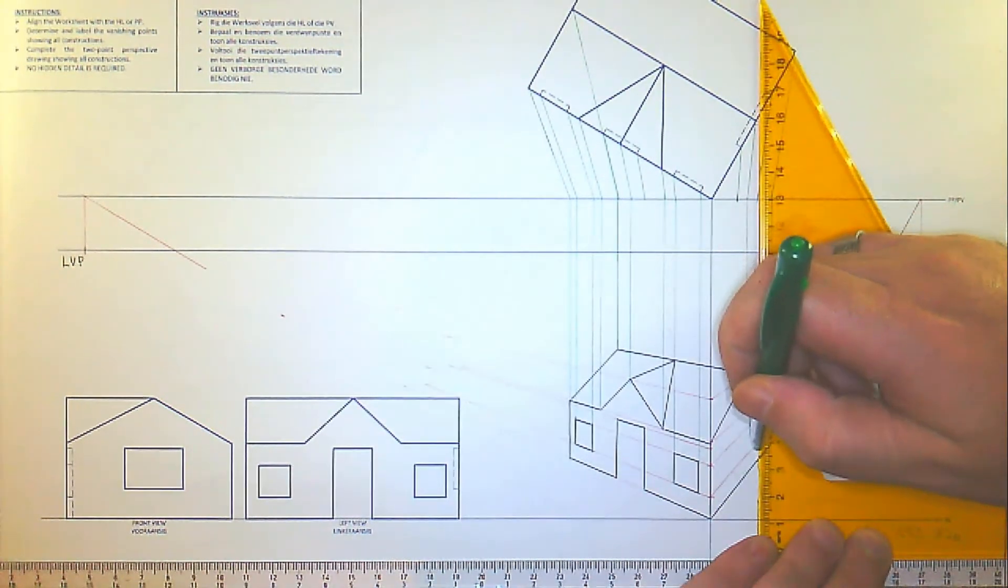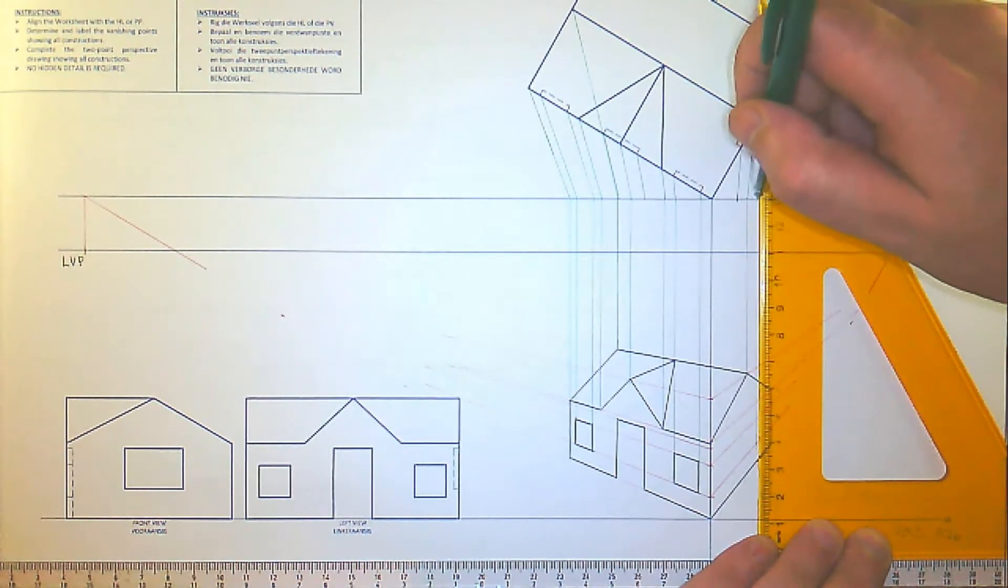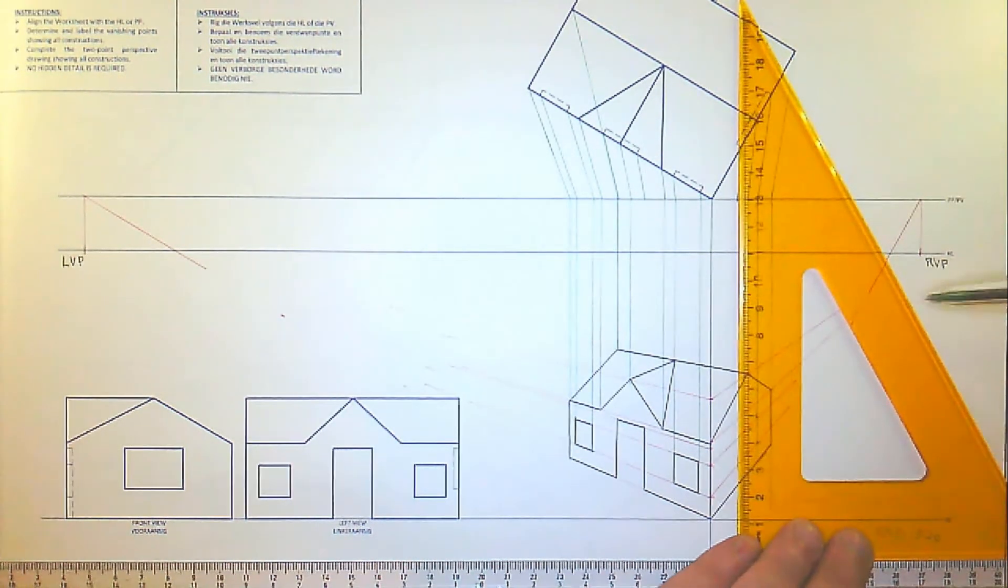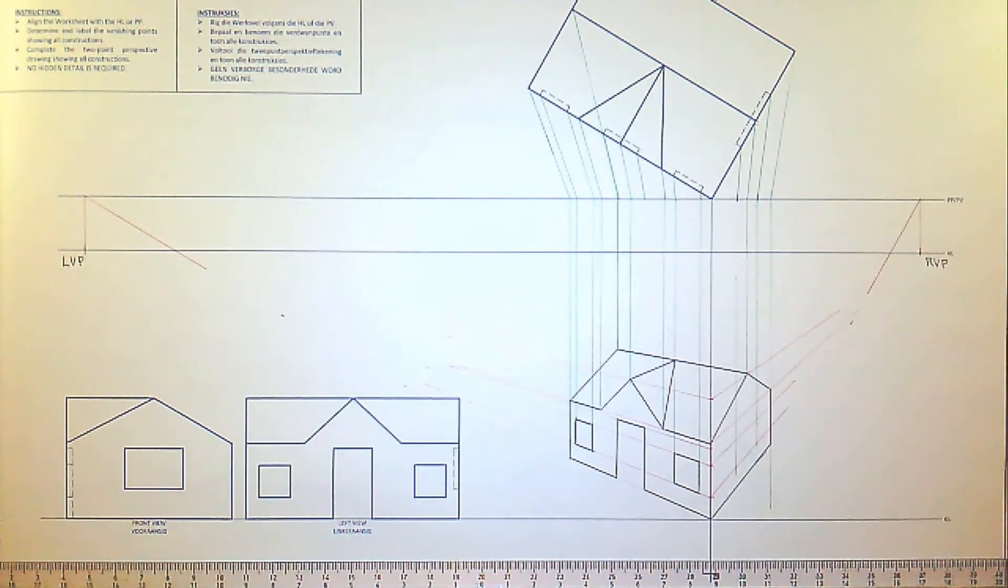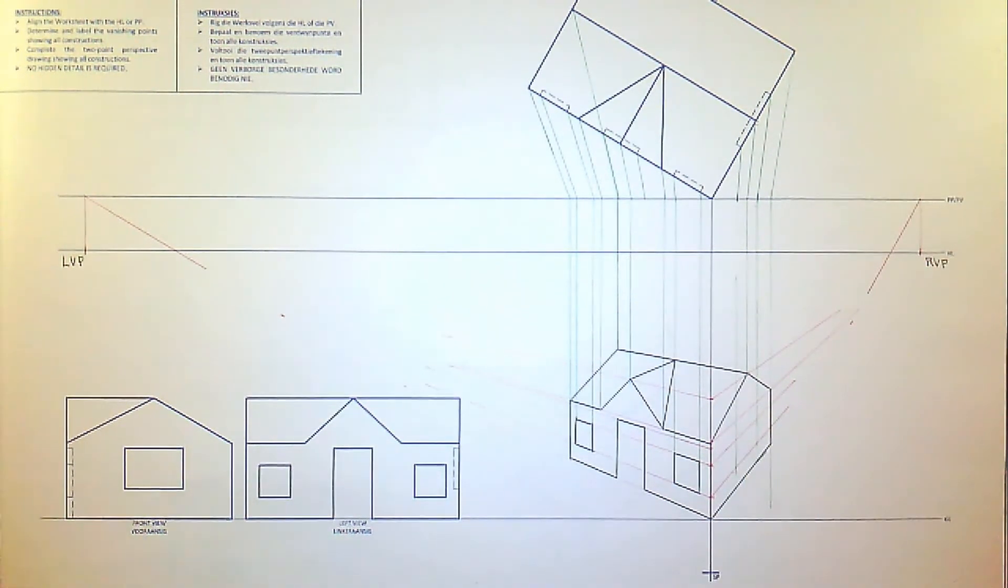Again, you will see the window detail here coming from that point. Same with the second. So you can see the location of the window and now we can immediately go and draw it solid.